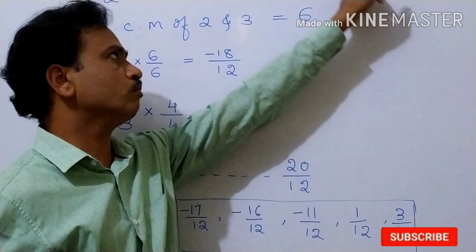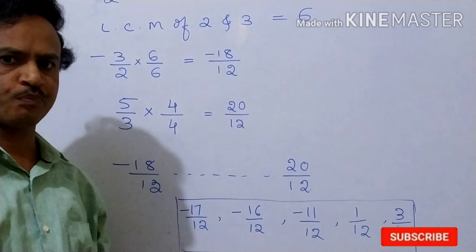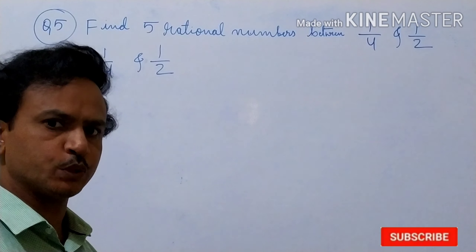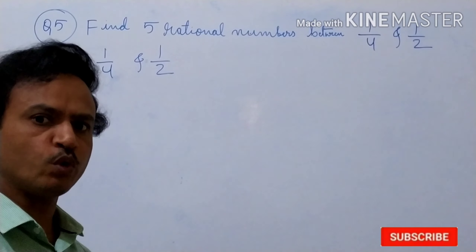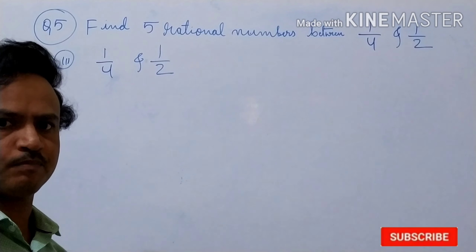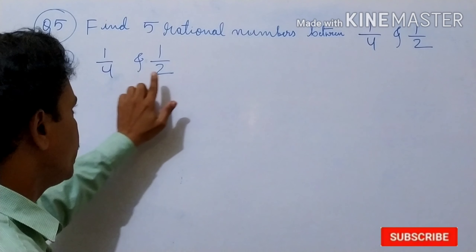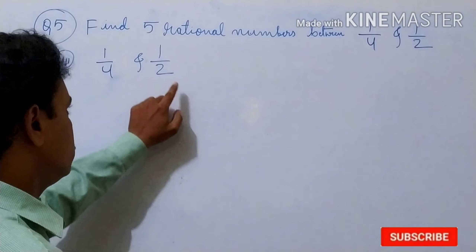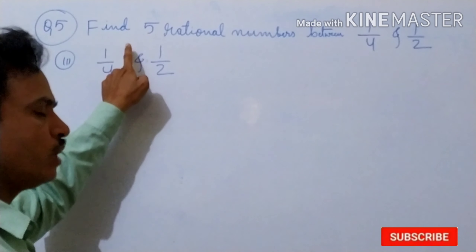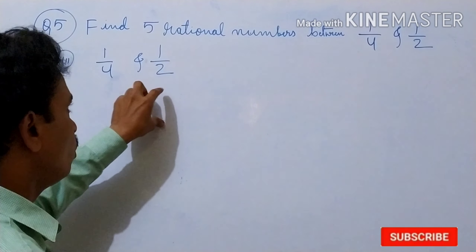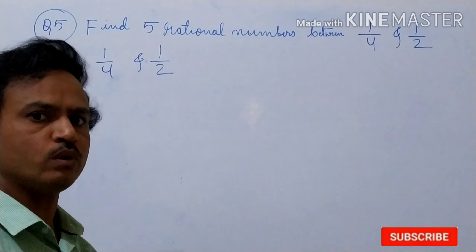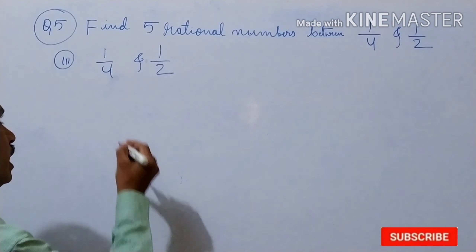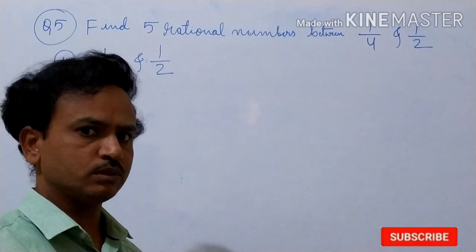In between these 2 numbers — minus 3 by 2 and 5 by 3 — we have 5 rational numbers. Now between 1 by 4 and 1 by 2: if you take these 2 numbers and find the LCM of 4 and 2, LCM becomes 4. If you multiply by 4 and divide by 4, you will not get 5 rational numbers — you will get only 3 rational numbers. So we will take one more number; you can take any number, but you should multiply and divide by the same number.